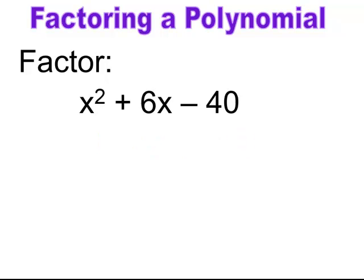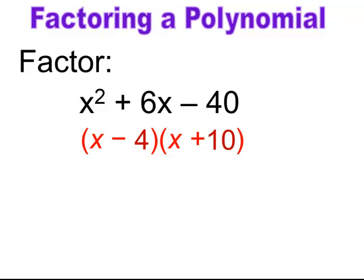Pause and try. The rule is (x − )(x + ) because c is negative. The factors are 4 and 10. Since b is positive, the higher factor goes with the plus. So the answer is (x + 10)(x − 4), or equivalently (x − 4)(x + 10).